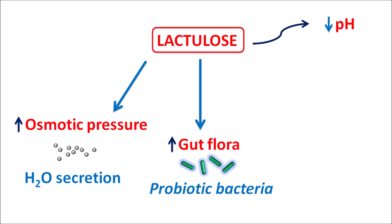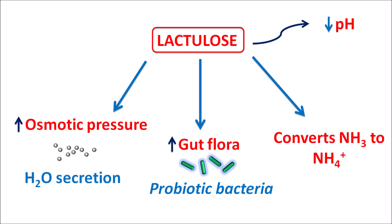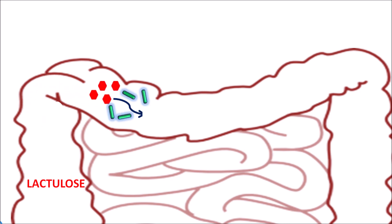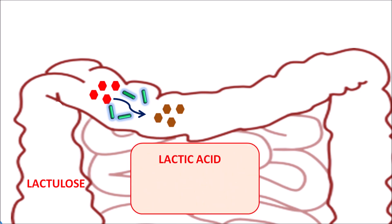Lactulose can also increase the development of gut flora — probiotic bacteria are improved in its presence. This probiotic bacteria can reduce those bacteria which utilize ammonia, so ammonia utilization is reduced within the colon. Finally, this drug can convert ammonia into ammonium ion, which is not easily absorbed and is excreted in the feces. Lactulose is a non-absorbable disaccharide that accumulates within the colon, where bacteria convert it to acidic components such as lactic acid, acetic acid, and formic acid.